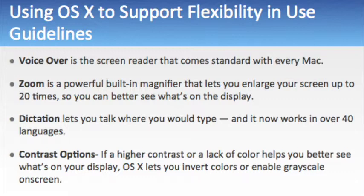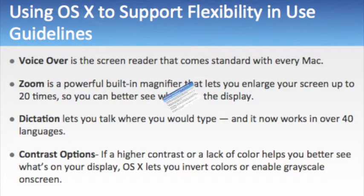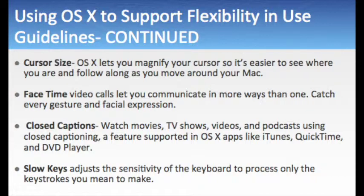Contrast options: If a higher contrast or a lack of color helps you better see what's on your display, OS X lets you invert colors or enable grayscale on screen. Once you set your preferences and apply them system-wide, you can get the same view in every application. You can also turn on increased contrast to enhance definition and reduce transparency as needed. Cursor Size: OS X lets you magnify your cursor so it's easier to see where you are and follow along as you move around your Mac.